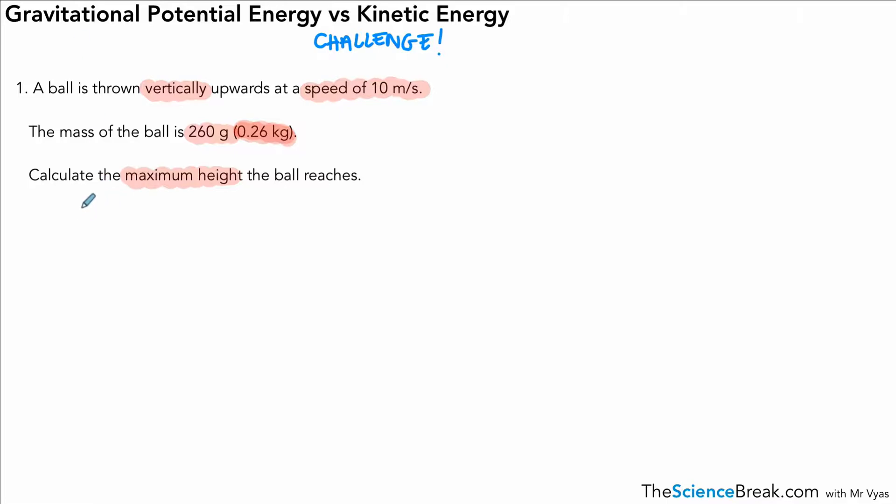The key idea here is that when a ball is thrown vertically upwards, the kinetic energy is transferred to gravitational potential energy. That means if we can calculate the kinetic energy, that will be the same amount of energy at the maximum height of the ball because it all gets transferred, assuming there are no other energy transfers.